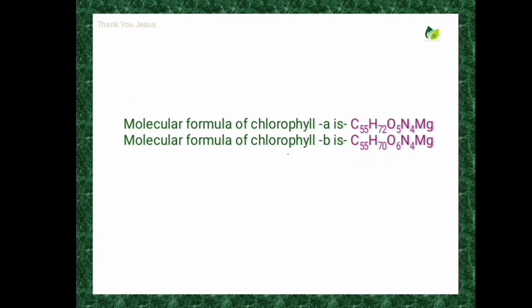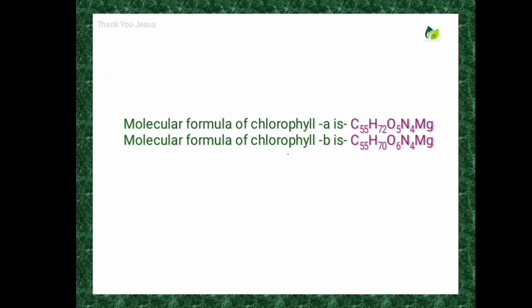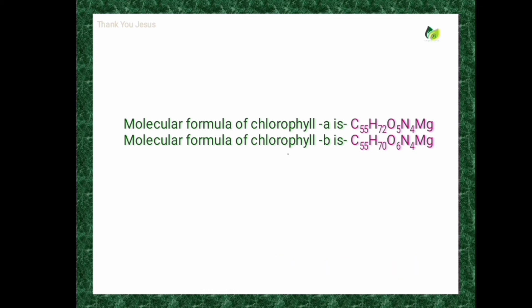The molecular formula of Chlorophyll A is C55 H72 O5 N4 Mg. The molecular formula of Chlorophyll B is C55 H70 O6 N4 Mg.